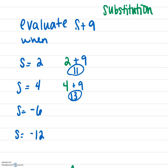Let's do it again: s equals negative 6. Don't let that negative freak you out — we're still substituting in what s equals, so s happens to equal a negative value. We're going to substitute negative 6 in with his teammates, plus 9. Now that we know what s is, we can simplify: negative 6 plus 9 would be negative 3, and that's going to be our final answer.